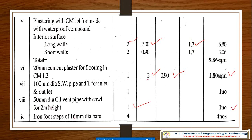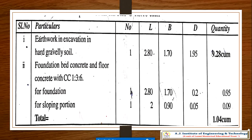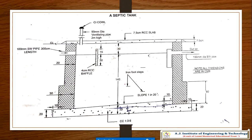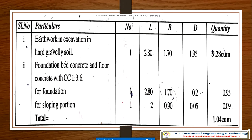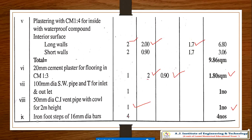Iron foot steps are also available in the market. These allow a person to enter and carry out maintenance activities inside the septic tank. The number of iron foot steps is 4, and that number is taken directly from the market at the applicable rate.